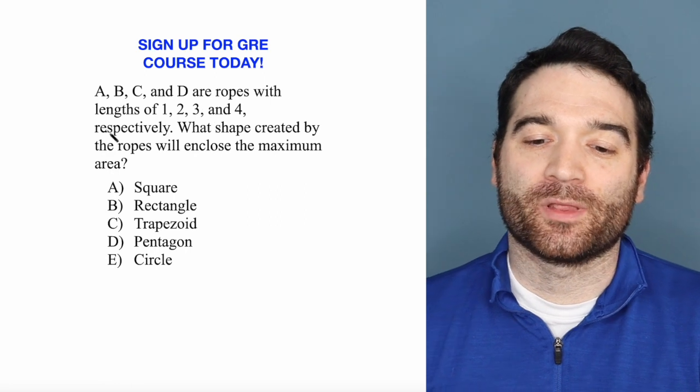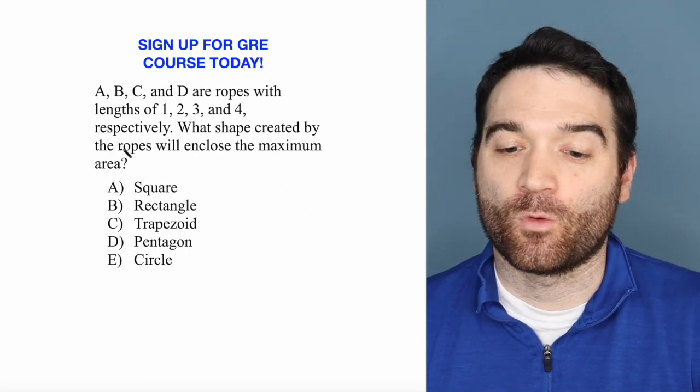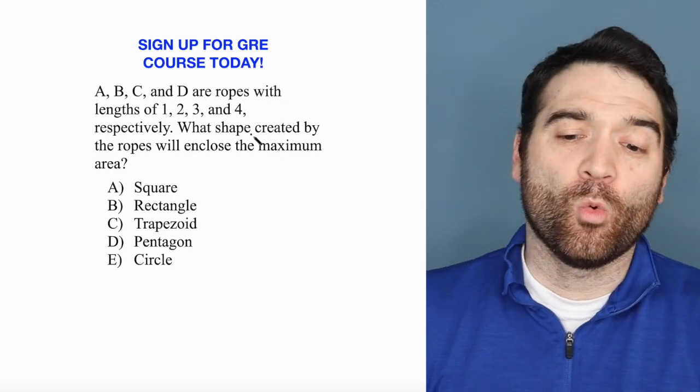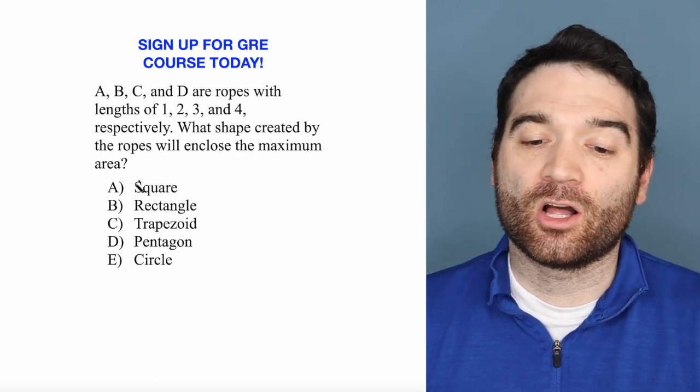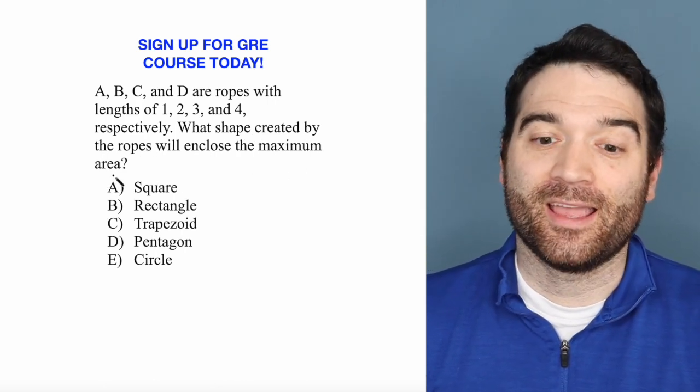A, B, C, and D are ropes with lengths 1, 2, 3, and 4, respectively. What shape created by the ropes will enclose the maximum area?